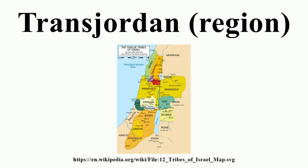Transjordan, the East Bank, or the Transjordanian Highlands, is the part of the southern Levant east of the Jordan River, mostly contained in present-day Jordan. The region, known as Transjordan, was controlled by numerous powers throughout history.